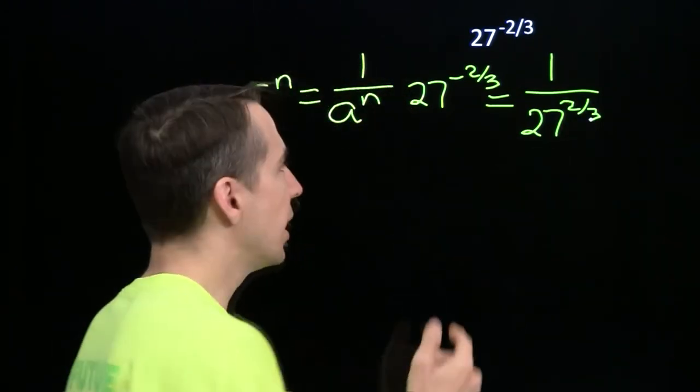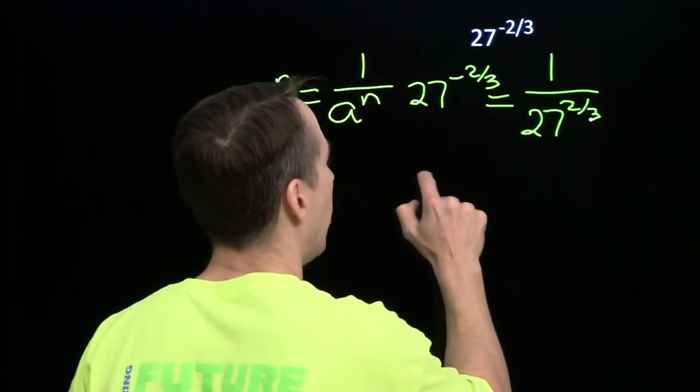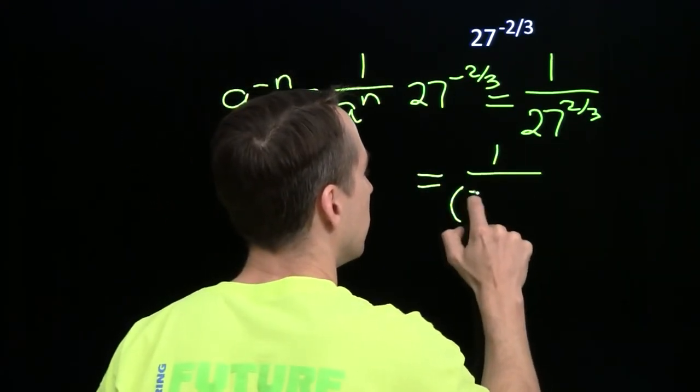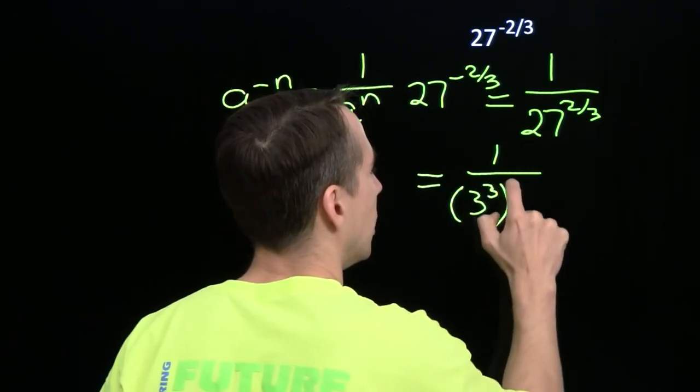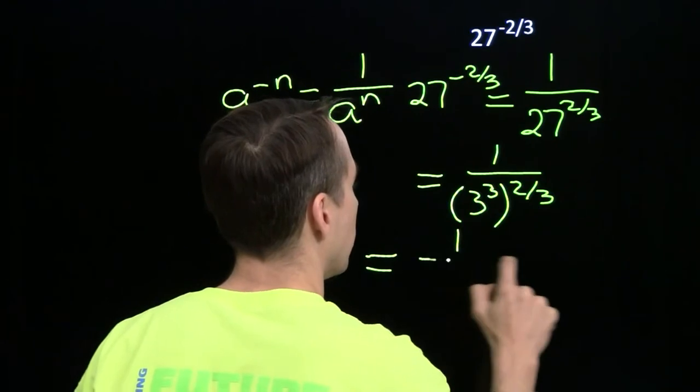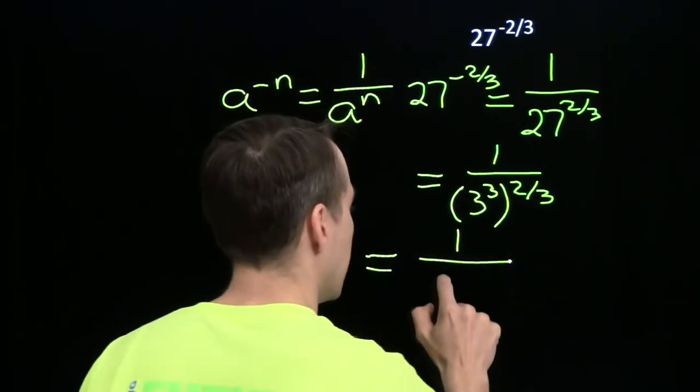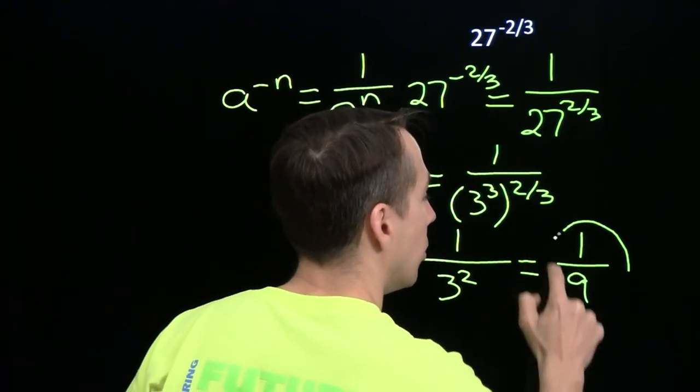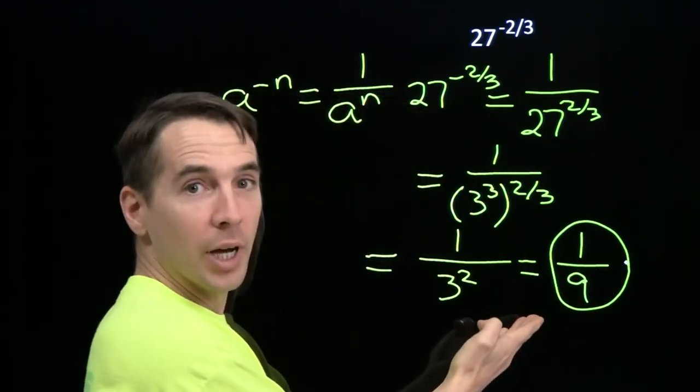And now we can use that exponent power of a power rule. So 27 is 3 cubed. And we're raising that to the 2 thirds power. So that's just 3 times 2 thirds, 2 thirds is 2. So this is just 1 over 3 squared, which is 1 ninth. And we're done.